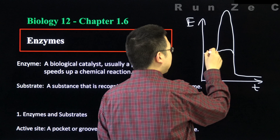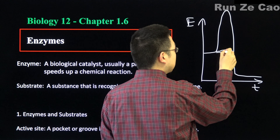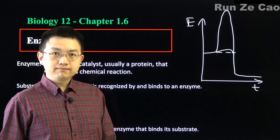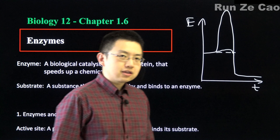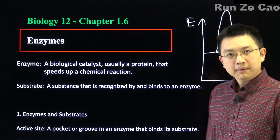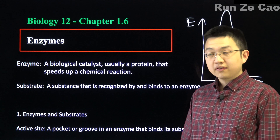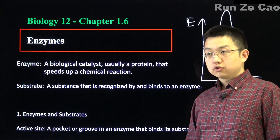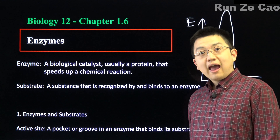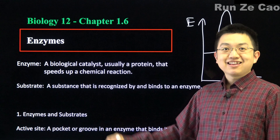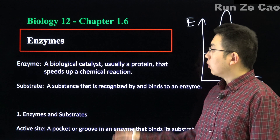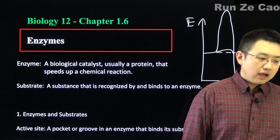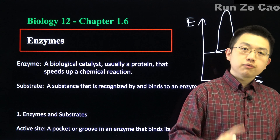We can use an enzyme to bind the reactants and make the activation energy really small. This can make processes that in some cases have half-lives of millions or even billions of years happen in milliseconds. Enzymes are incredibly efficient at what they do.